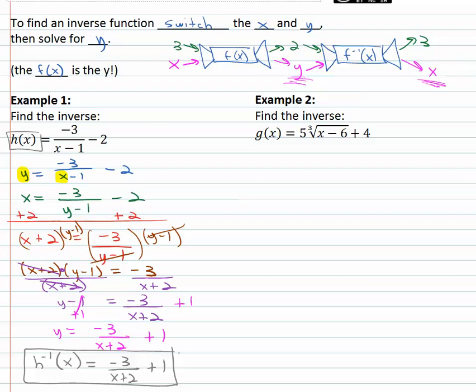Let's try that strategy again, where we switch x and y and solve for y. With g of x, we know that represents the y, so we really have y equals 5 times the cube root of x minus 6 plus 4.